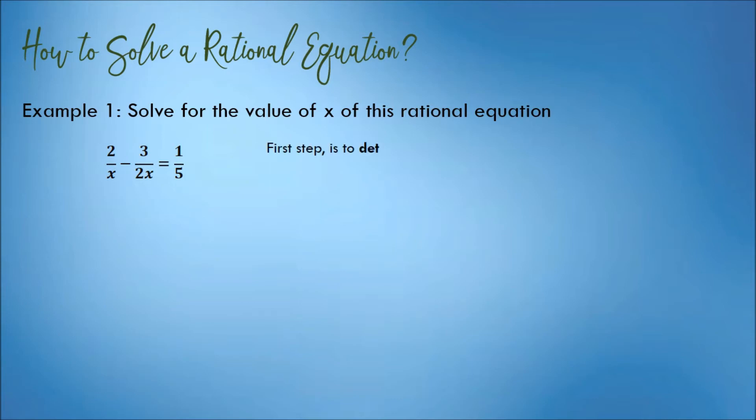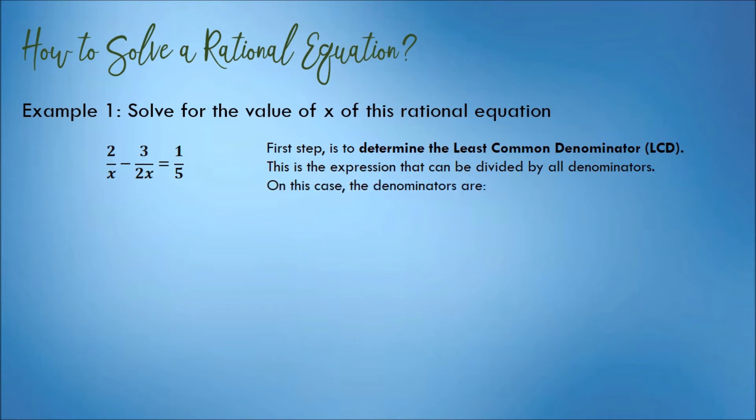The first step is to determine the least common denominator, or LCD. The LCD is the expression that can be divided by all denominators. In this case, the denominators are x, 2x, and 5. Their LCD is 10x, because 10x can be divided by x, can be divided by 2x, and can be divided by 5.